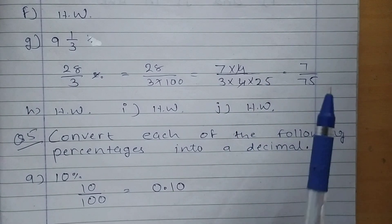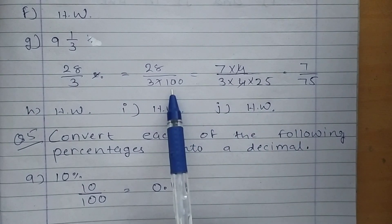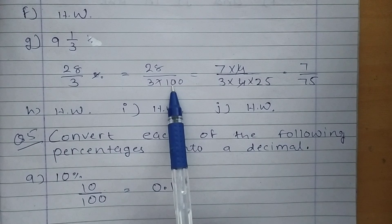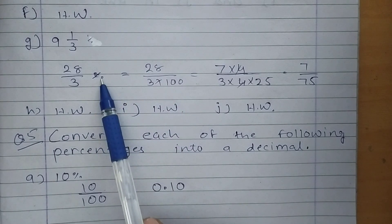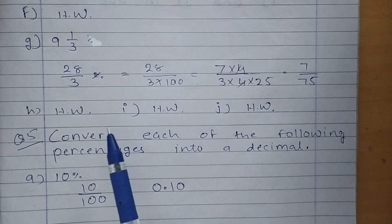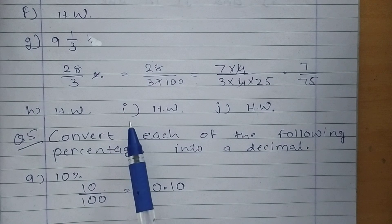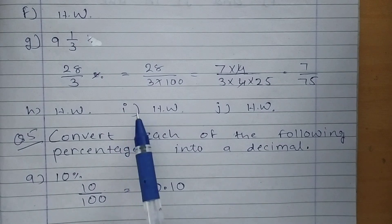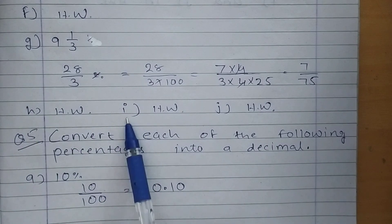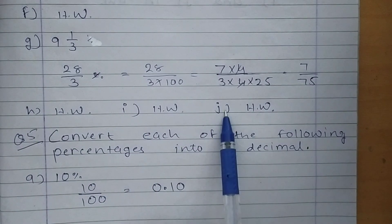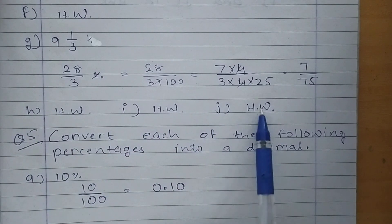Now students, when we write down 100 in the denominator, at that time remove the symbol of percentage. H, I, and J are in homework.